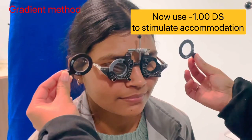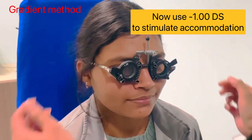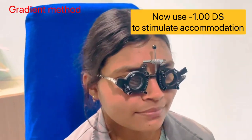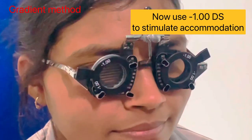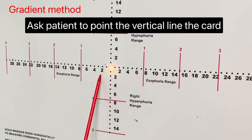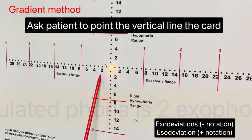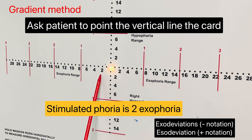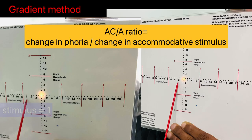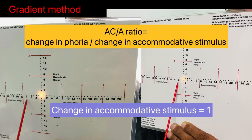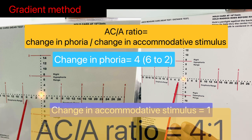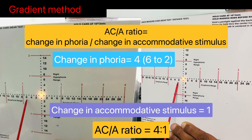Now you need to stimulate accommodation with minus lenses, either minus one or minus two diopters, to check the accommodative convergence. Here we use minus one diopter and the stimulated phoria came out to be minus two exo. The change in the phoria from without any lenses to minus one diopter came out to be four. Since the minus one diopter was used, therefore the AC/A ratio was 4:1.